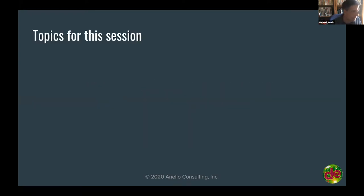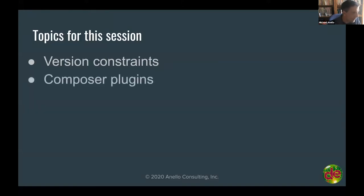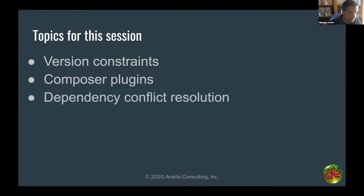So what are we going to cover today? We're going to do a little bit of a deeper dive into version constraints — specifically when you want a specific version of a dependency, which in the Drupal world often comes into play when you want an alpha, dev, or beta version of a module. We'll talk about plugins, not super deep but a couple of examples. And dependency conflict resolution — this is a big one because when I first started using Composer, this was the big scary: you're trying to do something and Composer says no. We'll talk about some strategies for that.